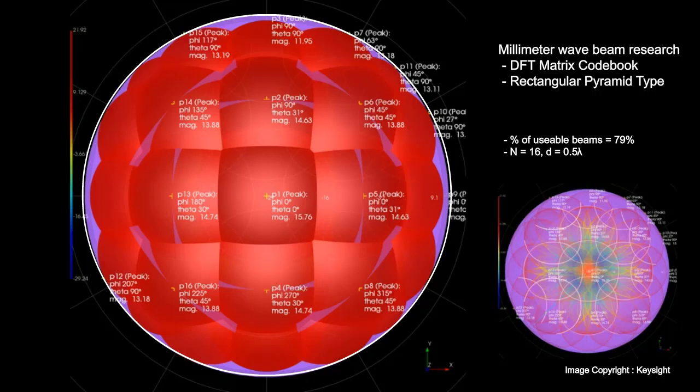Due to the constant modulus restriction at the analog components, it is important to design proper analog beamforming weights. In this case, we can see the DFT-based codebook create a rectangular pyramid shape of composite beam patterns, which provide quite insightful information in your design verification phase.